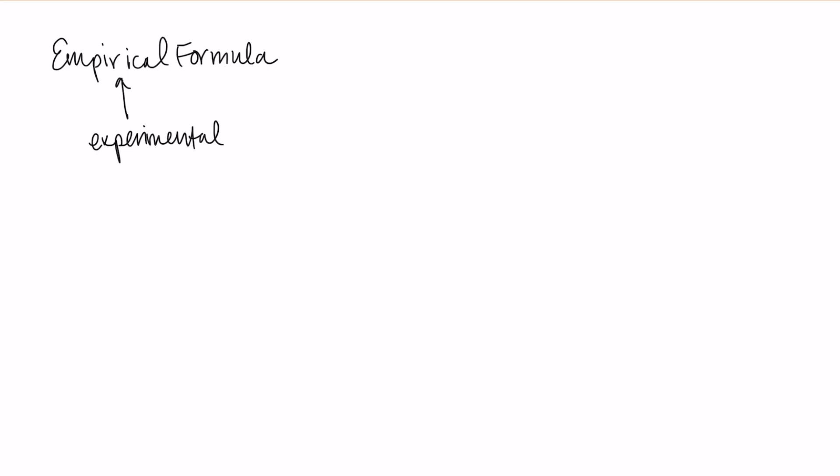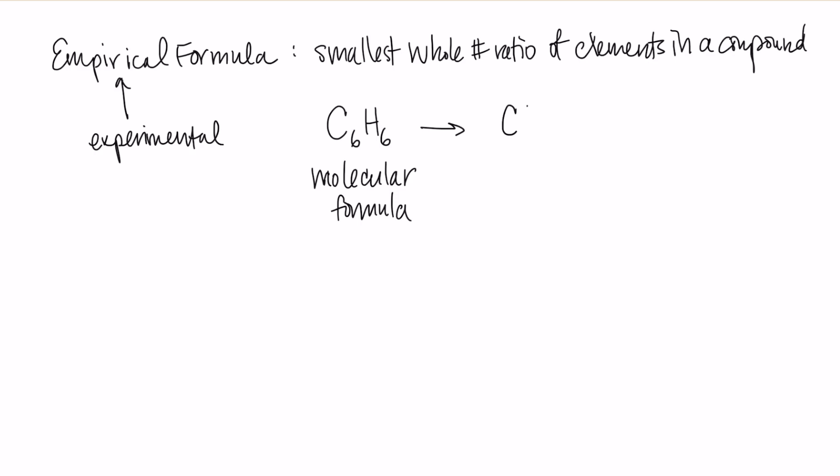And because it's done that way, it will always be the smallest whole number ratio of elements in a compound. So for example, if I had something like benzene, which has the formula C6H6, that's the molecular formula, the empirical formula is the simplest version, and that would be CH.